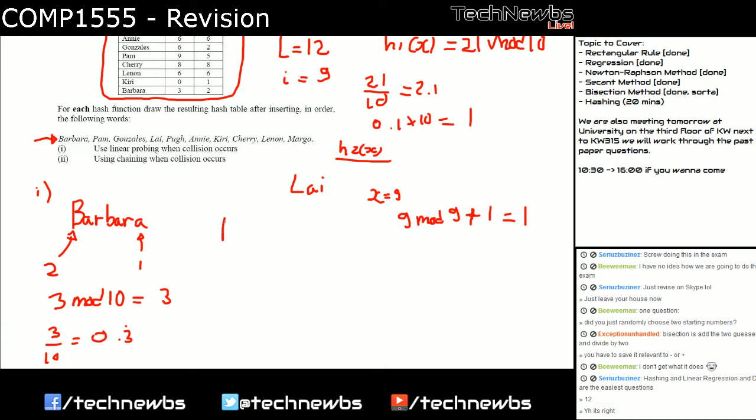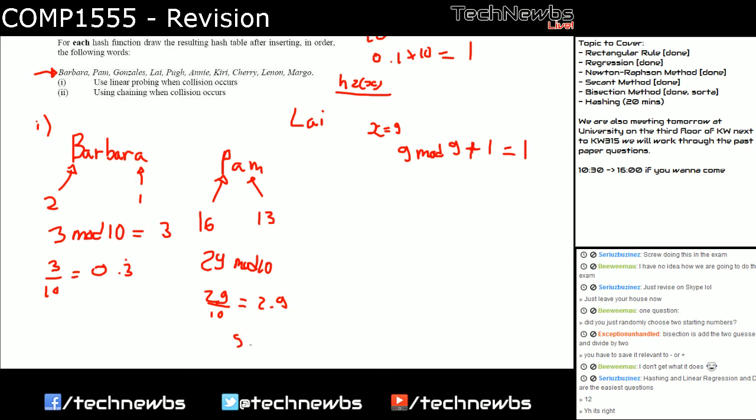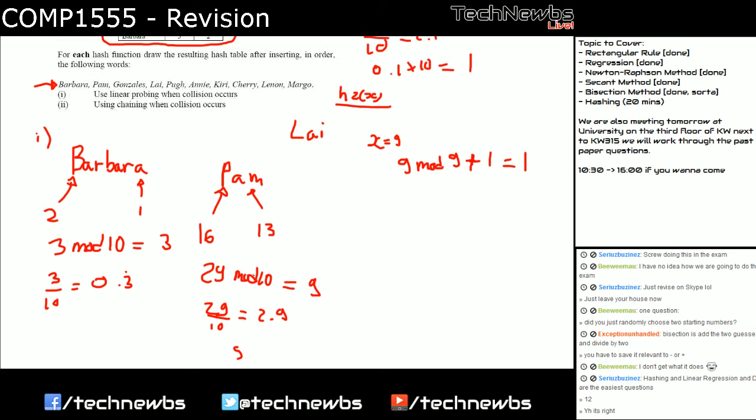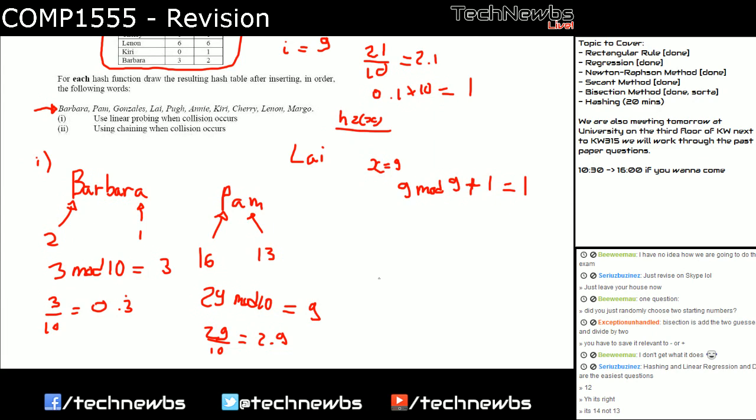Now let's try the next name, Pam. So P is 16, and M is 13. So together 29, it's 9 mod 10. 29 over 10 is 2.9, so it's 9. It's easy to find, actually. It's 29 mod 10, 20 goes into 10 twice and then it gets 9 left out, so it's 9. So Pam goes into index 9. You'll be filling out the table like that.